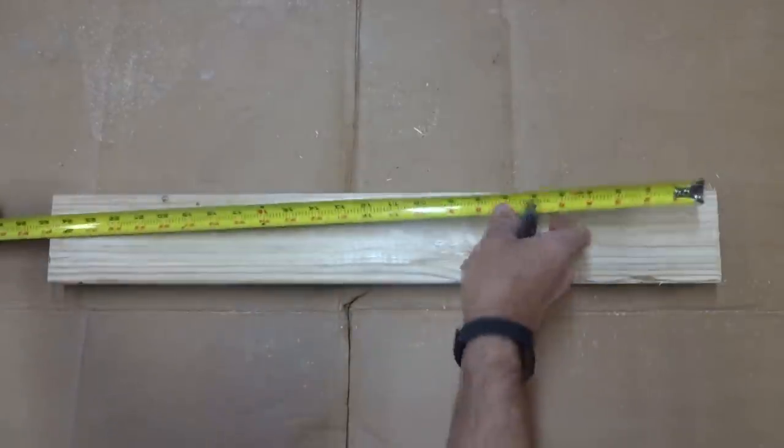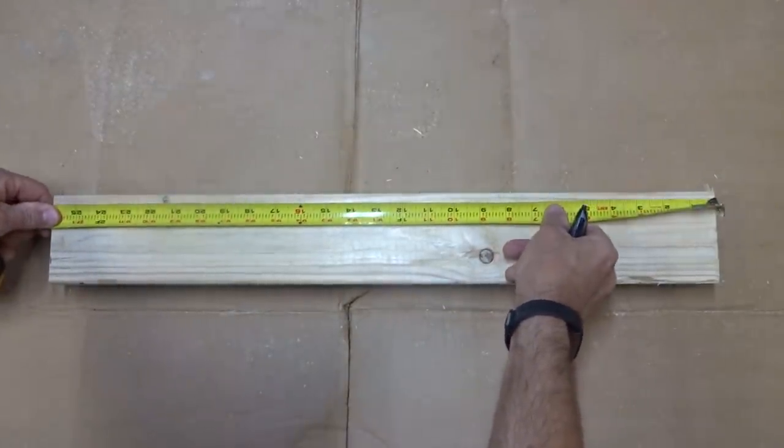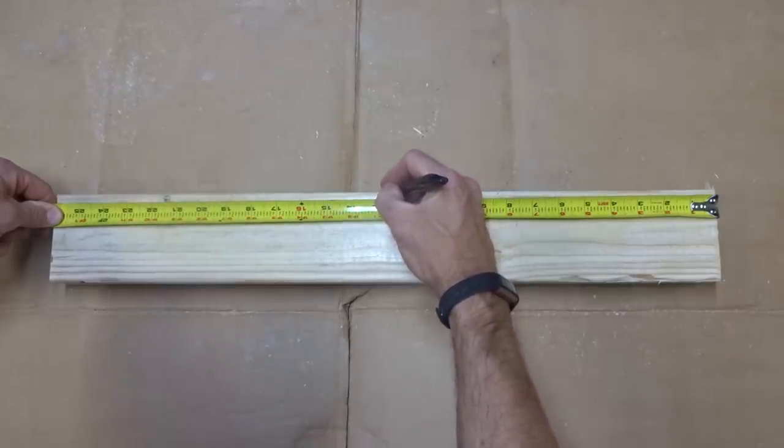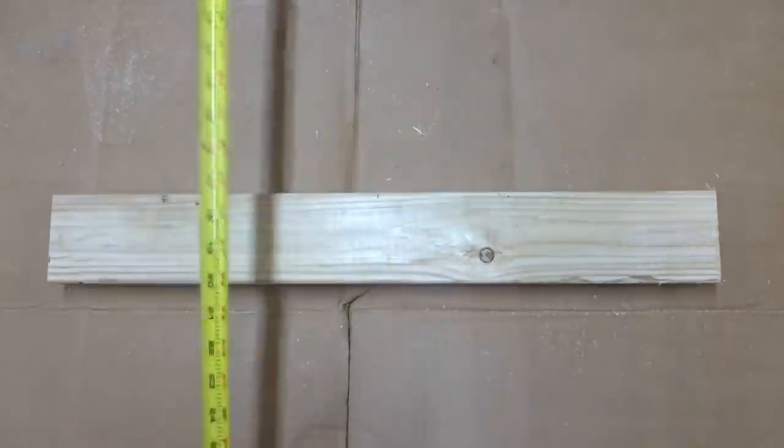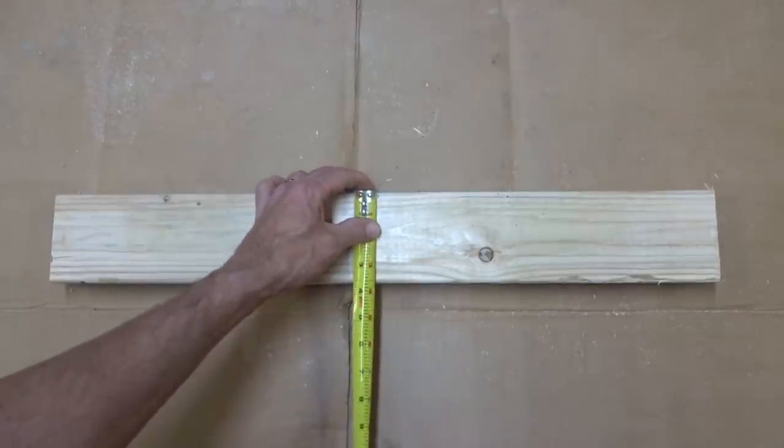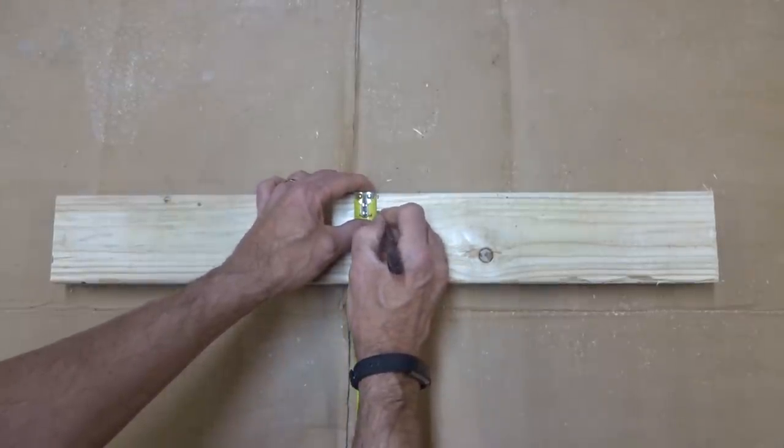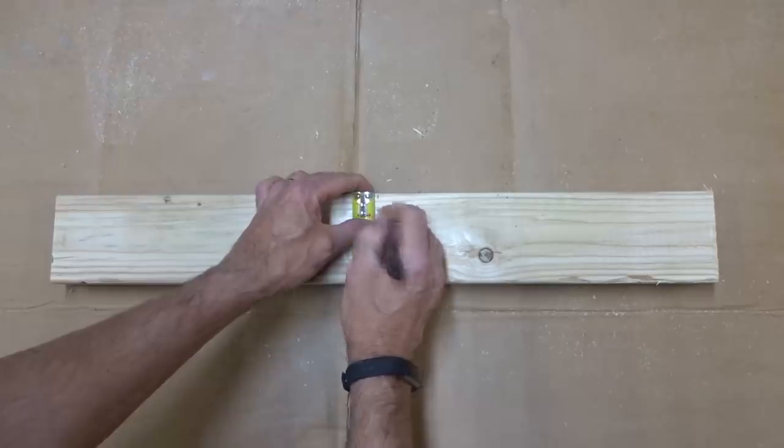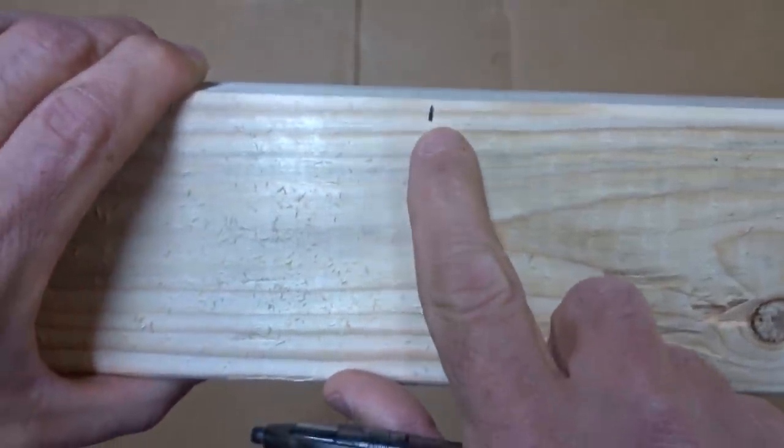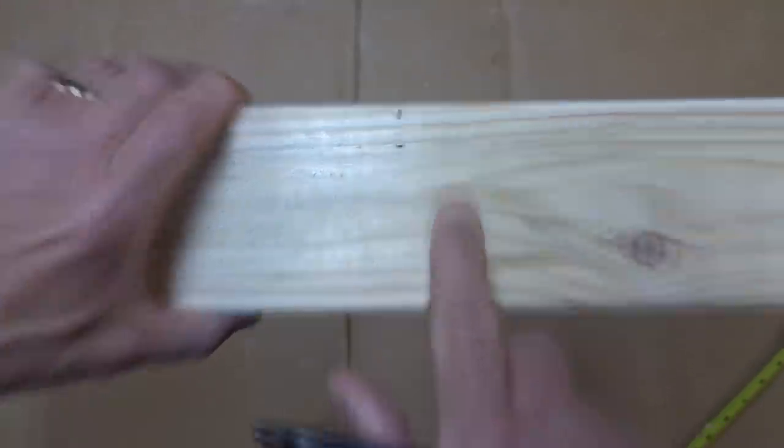Now I want to mark the center here. Since it's 26 inches long, the center would be right at 13 inches. So I'm going to make a little bit of a mark right there at 13 inches. And I also want to make a mark down about three quarters of an inch down right here. So just make a little mark right there and then three quarters of an inch down like that.